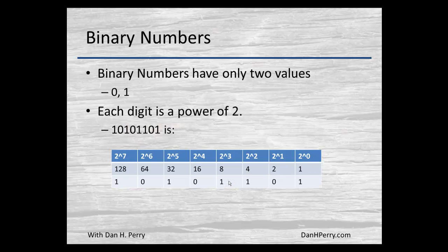Binary numbers — we only have two values, a zero and a one. Instead of ten digits, we have two digits. Each digit is a power of two, not ten. Starting at the rightmost, we have two raised to the zero power, or the ones column. Then two to the first power, or the twos column. Notice that as we move to the left, each time we add a power, the value doubles. So when we get to the leftmost position, two raised to the seventh power, that gives us 128.